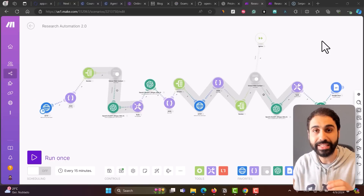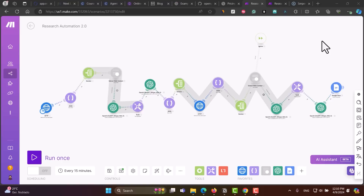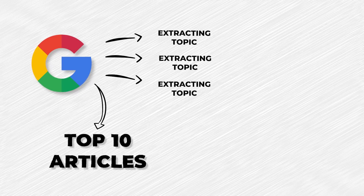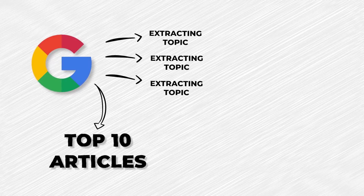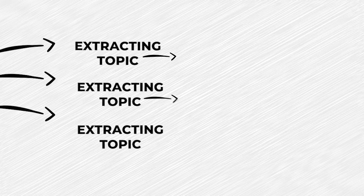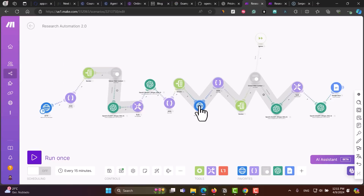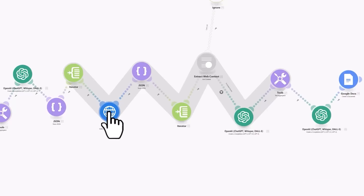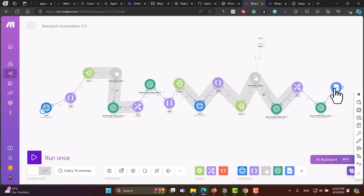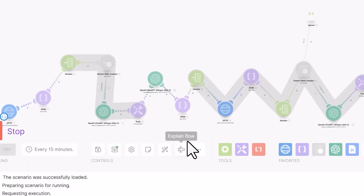Now let's look at the advanced workflow. The main difference here is that instead of searching Google for the top 10 articles and creating content directly, we first extract topics and ideas from those articles. Then for each topic — maybe 50 topics — we search Google again and get 10 results per topic. So we're doing a full research, searching hundreds of articles. Based on all that, we generate the final output. Let's run it — for example, 'AI agents' — click ok. It will take a little more time because of the detailed research.